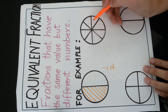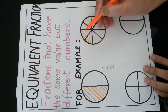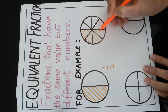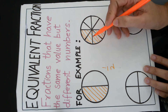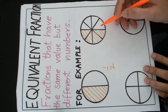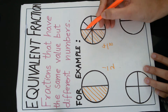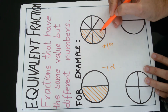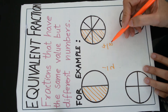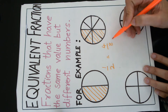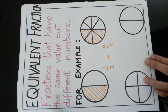In this circle we have a total of 8 parts. If I shade again half of the circle, it means I have shaded 4 parts out of the total 8 parts. I will represent this in the form of fraction as 4 upon 8. This is again half of the circle, so we can say 1 upon 2 is equal to 4 upon 8. They are equivalent fractions.